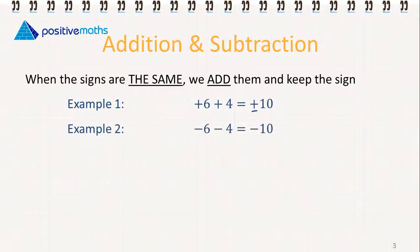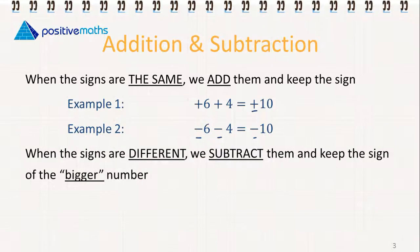Example 2: the signs are the same, we keep the sign and we add the two numbers — so minus 6, minus 4 gives us minus 10. When the signs are different, we subtract and we keep the sign of the bigger number. For example, minus 8 plus 4: we subtract the numbers and we get 4.